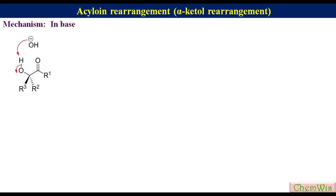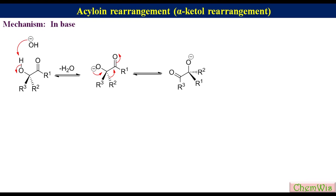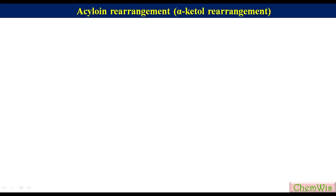In basic conditions, the base abstracts the alcoholic proton to form an alkoxide ion, which undergoes migration of the group having greater migratory aptitude from the alpha carbon to the carbonyl carbon. This produces a rearranged alkoxide ion, which after protonation gives the rearranged product.